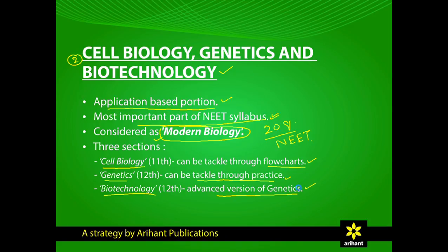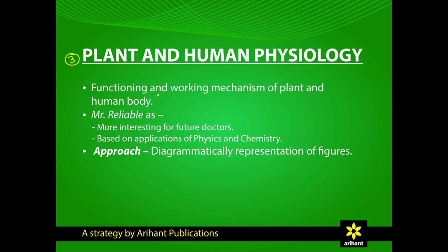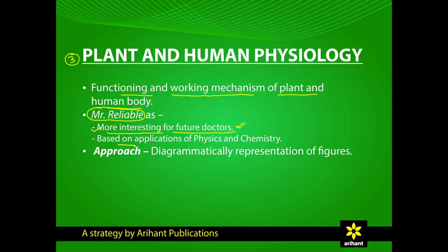The third section is Plant and Human Physiology. It covers the functioning and working mechanism of plant and human bodies. This section is considered reliable for two reasons: students aspiring to be doctors show more interest here, and since it is based on applications of physics and chemistry, students with average knowledge of those subjects can understand it well. Diagrammatic representation and flowchart preparation are the most important tools for this section. According to analysis of the last three NEETs, 20 questions were asked from this section.